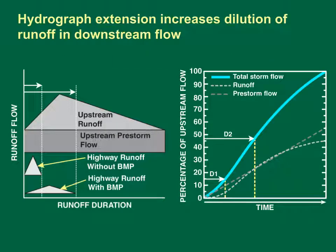Hydrograph extension increases dilution of runoff in downstream flow. The diagram on the left shows the runoff hydrograph from a basin upstream of a site of interest and two potential hydrographs from that site. The hypothetical graph on the right shows the cumulative percentage of total upstream storm flow that occurs as the storm progresses. The diagram shows two potential runoff hydrographs: one with a short duration, and the other with a longer duration. This longer duration hydrograph may represent the effect of design changes or use of best management practices that slow runoff flows.